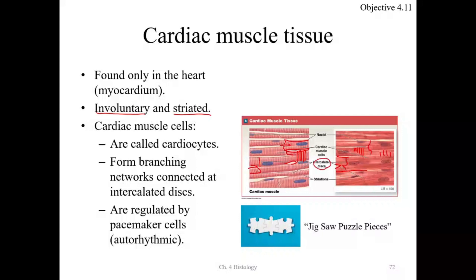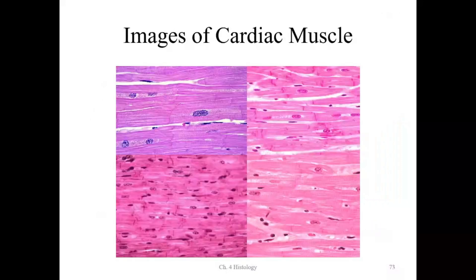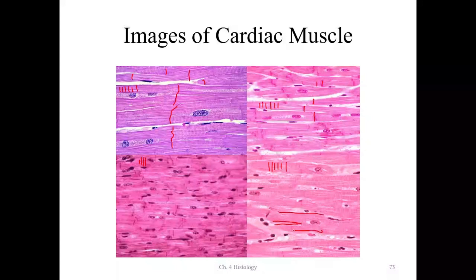Cardiac muscle is regulated by pacemaker cells called autorhythmic cells. The intercalated discs can look like jigsaw puzzle pieces put together. On the slides you can see the striations, the intercalated discs, and the branching patterns clearly — though the bottom left image is not ideal for showing striations.